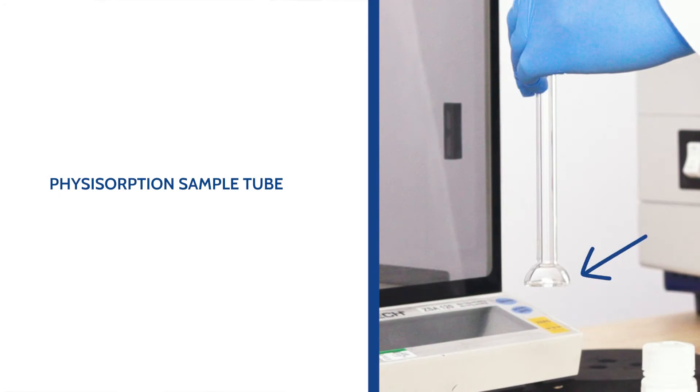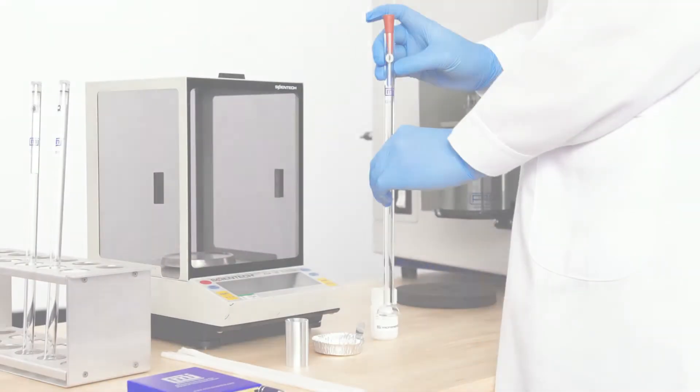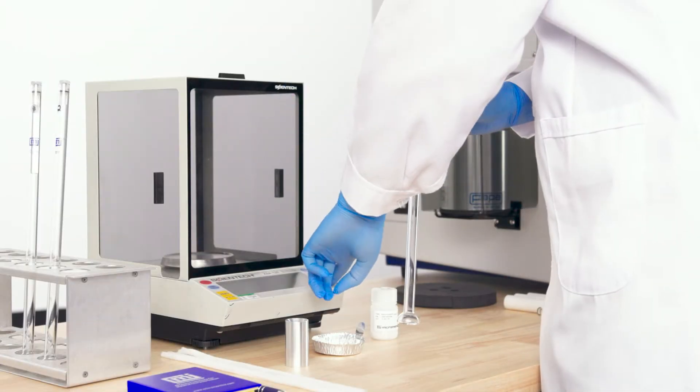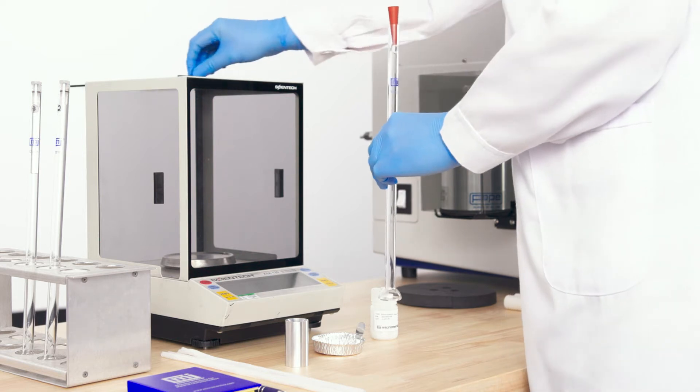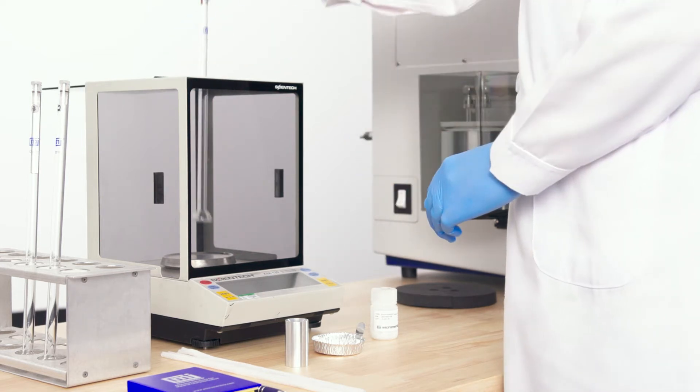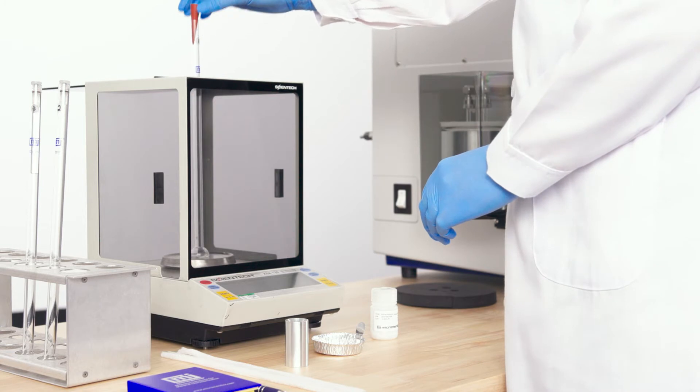The standard physisorption 3Flex tube has a flat bottom with a 12-millimeter opening diameter. Tare the balance. Place the empty sample tube with the rubber stopper on the balance and use good lab practices to determine the mass and record.